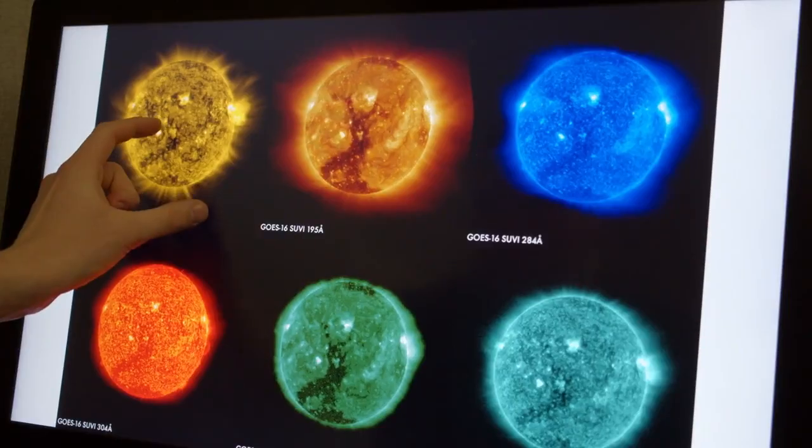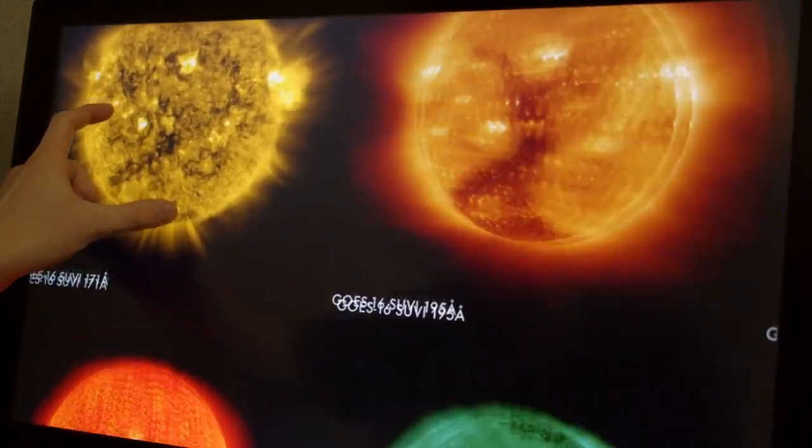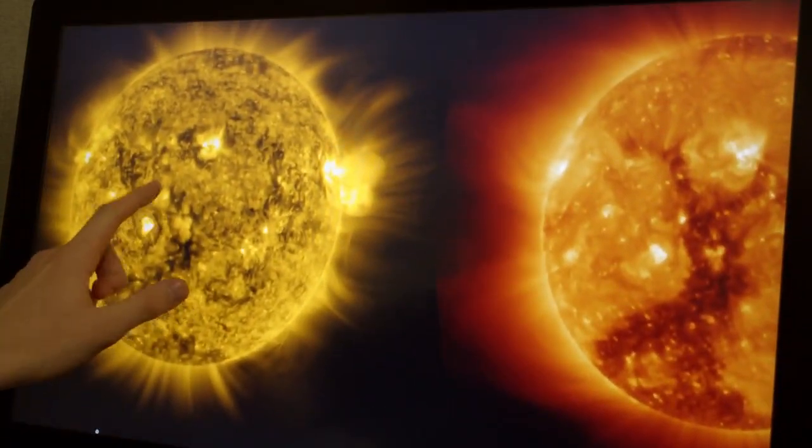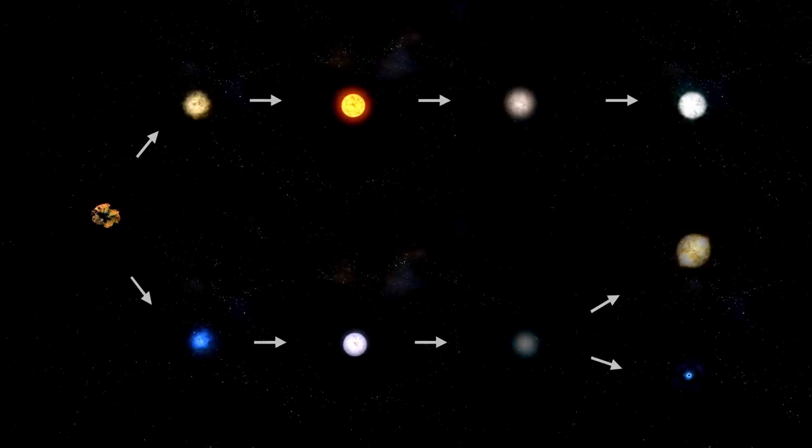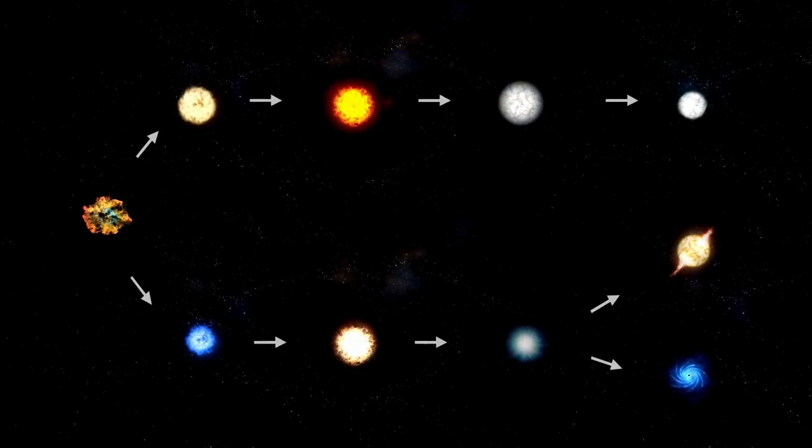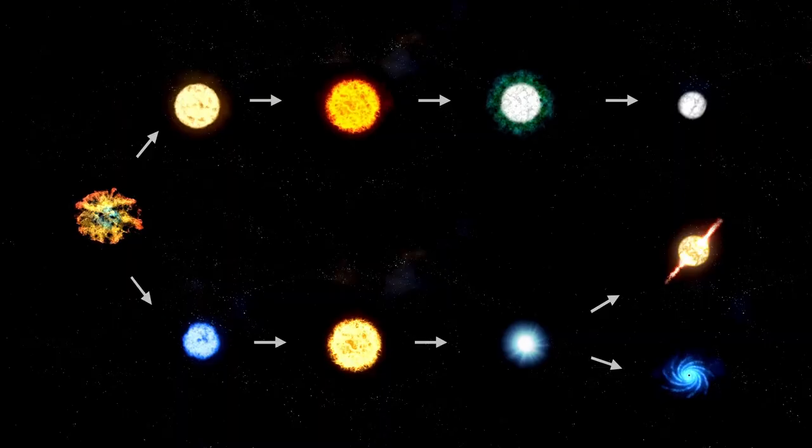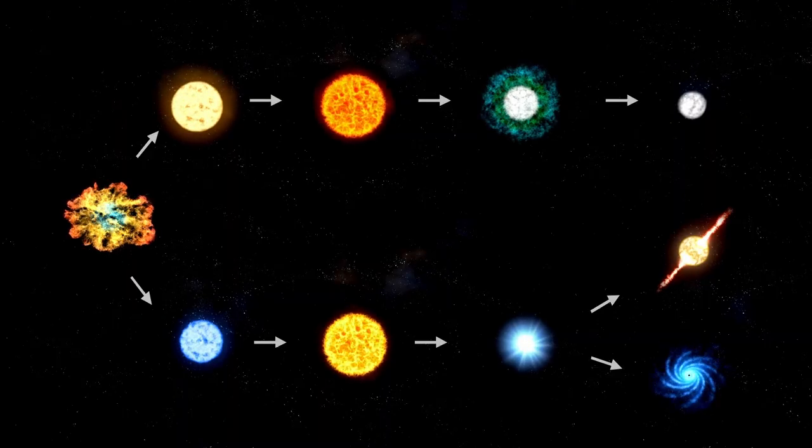There are several hypotheses regarding what caused the dimming. One theory is that Betelgeuse is progressing through a stage leading to a supernova, while another suggests that dust from ejected stellar material is obscuring our view. A third possibility involves changes in the star's photosphere, affecting its observed brightness.